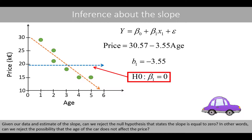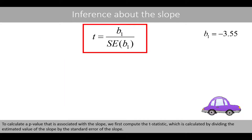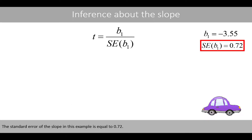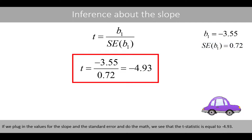In other words, can we reject the possibility that the age of the car does not affect the price? To calculate the p-value that is associated with the slope, we first compute the t-statistic, which is calculated by dividing the estimated value of the slope by the standard error of the slope. The standard error of the slope in this example can be calculated by the following formula; however, to save time, I use the software to compute the standard error. The standard error of the slope in this example is equal to 0.72. If we plug in the values for the slope and the standard error and do the math, we see that the t-statistic is equal to negative 4.93.